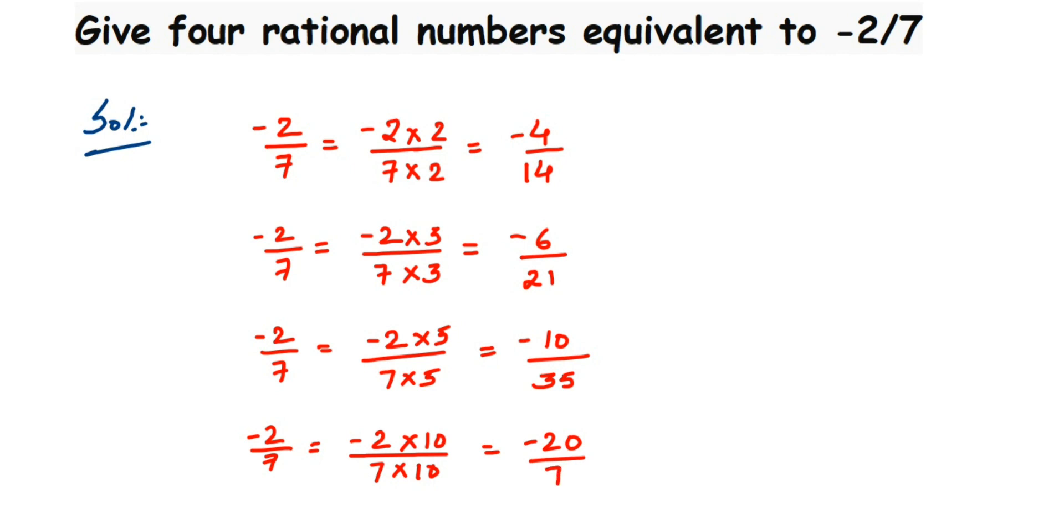So you can see that minus 4 by 14, minus 6 by 21, minus 10 by 35, minus 20 by 70, all these are equivalent rational numbers of minus 2 by 7. Like that we can multiply with any number. You can take 100, you can take 1000, you can take 99. Just make sure that multiplication is easy so that you don't have to put a lot of effort there.